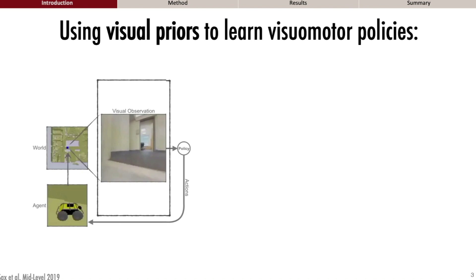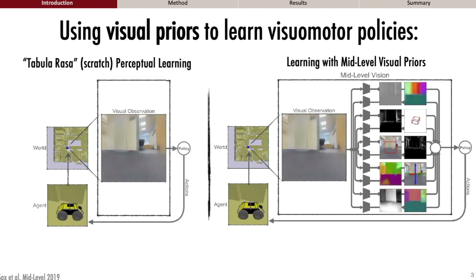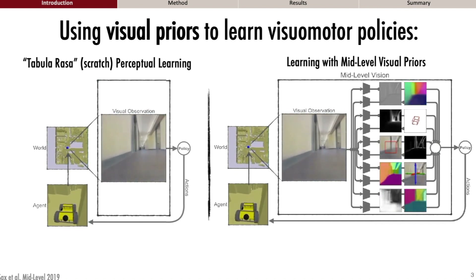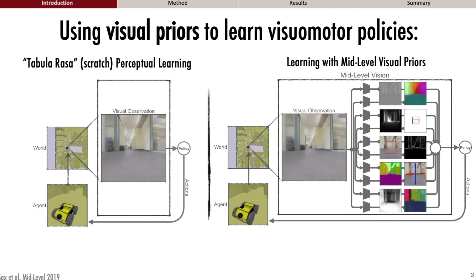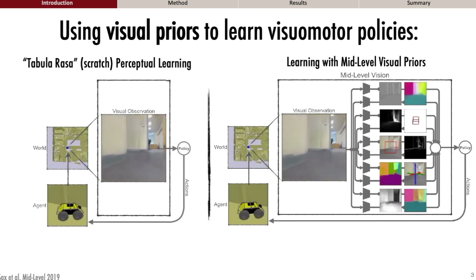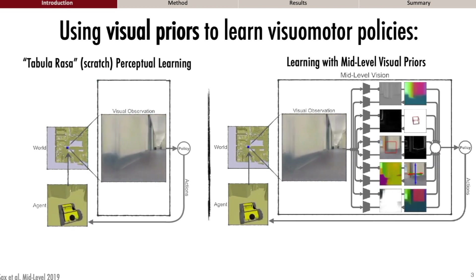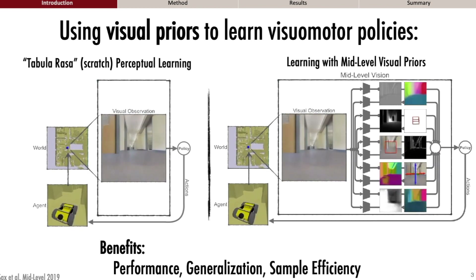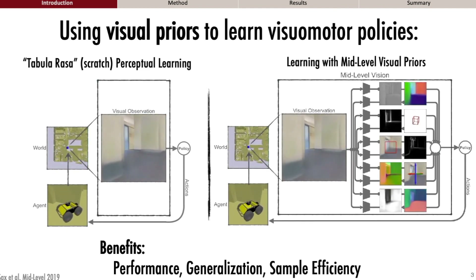We propose to alleviate these problems by inducing visual priors, which bias agents towards using useful visual abstractions. Some examples of these abstractions are that the world is 3D, or that there are objects, and in an image all the pixels that correspond to the object will move in some constrained manner. We find that doing so yields benefits in terms of performance, generalization, and sample efficiency.